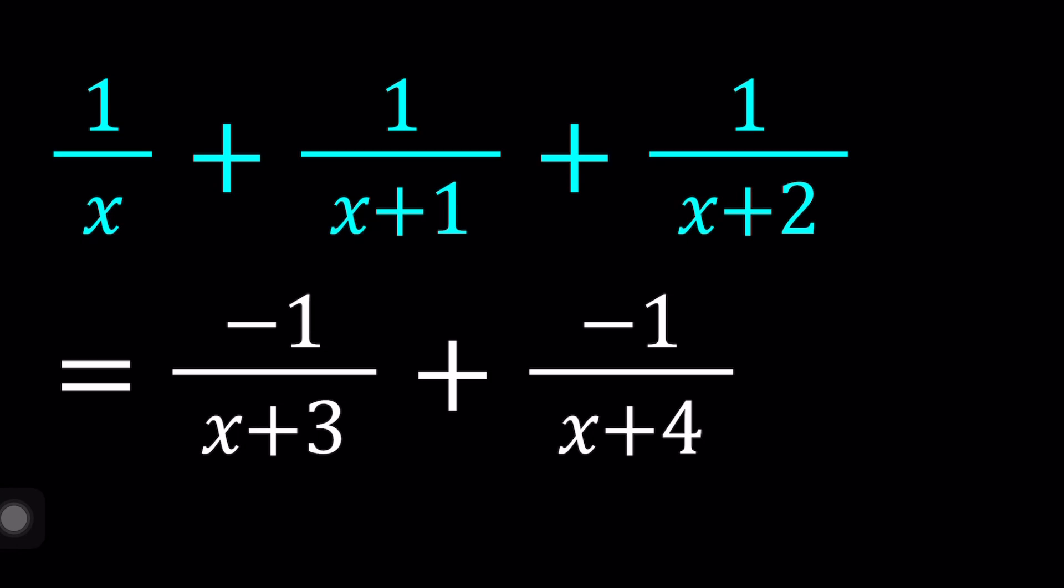It's a really nice problem. What's really nice about this problem is that we have consecutive expressions, numbers, quantities in the denominators. X, X plus 1, X plus 2, X plus 3, X plus 4. And the reciprocals are being added and we get zero. How nice is that, right? Beautiful.